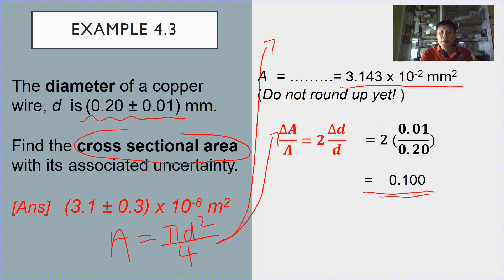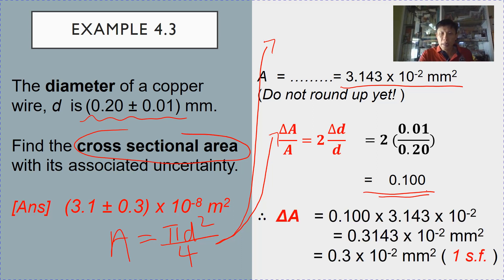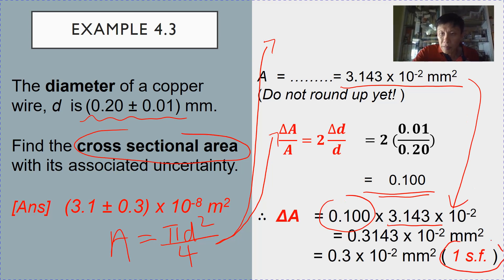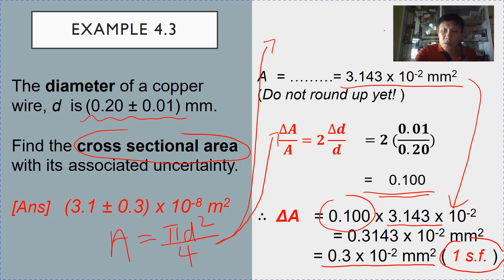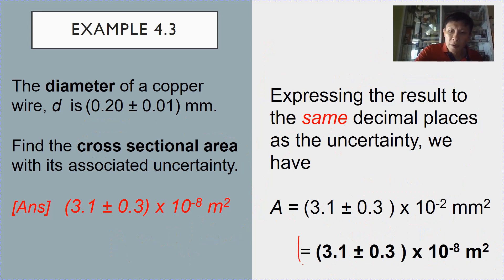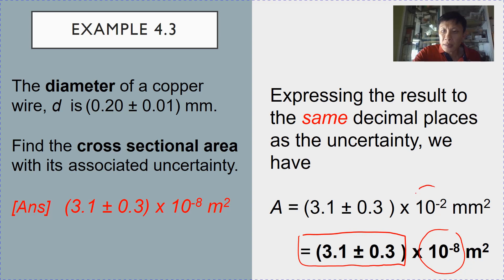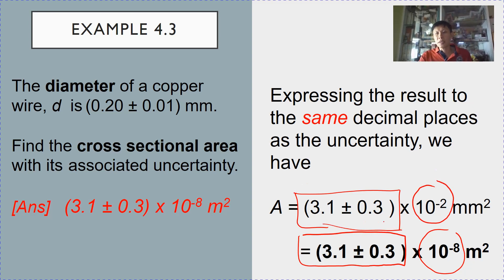Again, Step 1: convert the fractional uncertainty to the actual uncertainty of A by multiplying 10% by the true value of A. Then Step 2: round to 1 significant figure — this gives your actual uncertainty of A. Then round the value of A to the same number of decimal places as the uncertainty. The final expected answer is 3.1 plus or minus 0.3, multiplied by 10 to the power of minus 8 if in meters squared, or times 10 to the power of minus 2 if in millimeters squared. Note that the numerical part of the expression is the same regardless of unit.